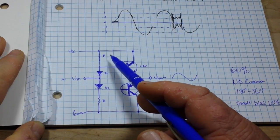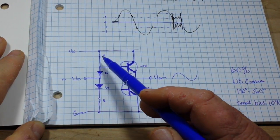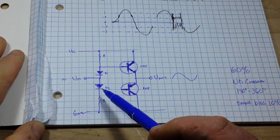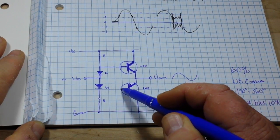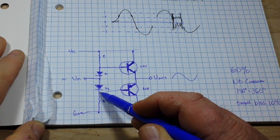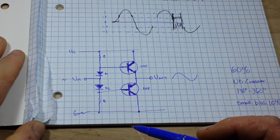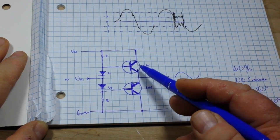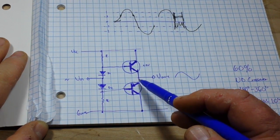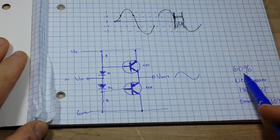Now you can see its similarity to the Class A amplifier in that we are biasing the bases of the transistors. And you can see its similarity to the Class B as that we're using a push-pull design.